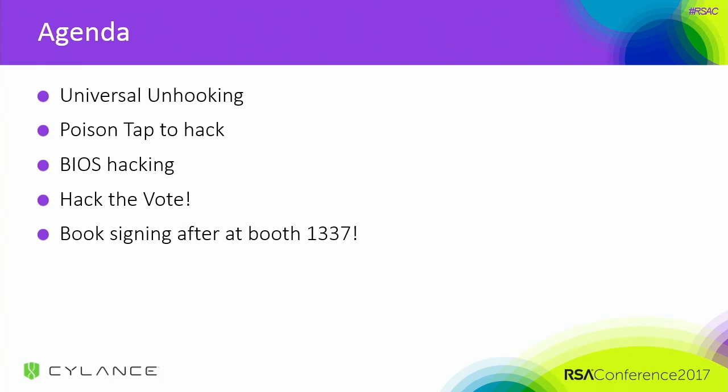The first demo is what I call universal unhooking. A lot of what we do in cybersecurity to monitor what's happening on a computer system is by hooking things — hooking the kernel in old versions of Windows, hooking user space in new versions of Windows. That's the only way security practitioners can see what's going on in the operating system and actually stop something in real time. We have a way to universally shut off that hooking capability, which means you can shut off any security technology.